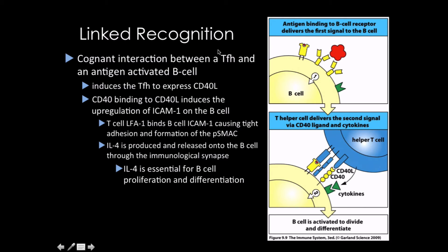When a B-cell interacts with a T-cell, it usually does so through linked recognition — this is called cognitive interaction between a T-follicular cell and an antigen-activated B-cell. Just like all other helper cells, T-follicular helper cells, upon interacting with the MHC complex, immediately induce expression of cytokines. The most important ones to know are CD40 ligand — which makes the B-cell more receptive to soluble cytokines — and interleukin-4, secreted by the T-follicular helper cell. ICAM interacts with LFA-1 to keep the B-cell in close proximity.